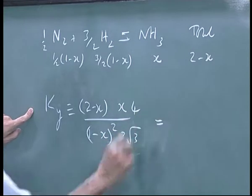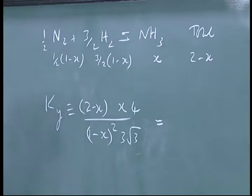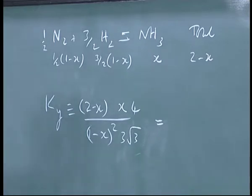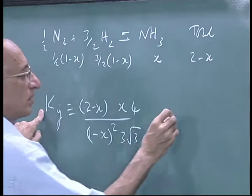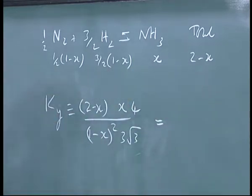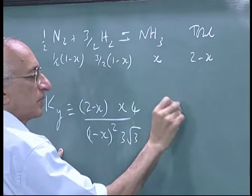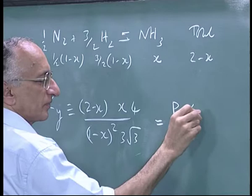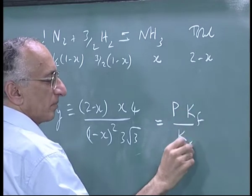This is equal to, this is just from the definition, equal to P times, is it P or 1 by P? It's P to the power minus 1, so it is P times KF by K phi.